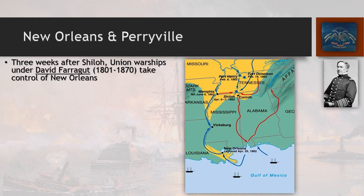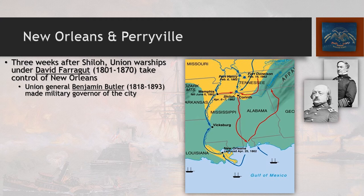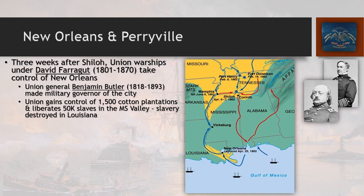Three weeks after the Battle of Shiloh, Union warships under David Farragut arrive in the Gulf of Mexico and take control of New Orleans, setting up a naval blockade and preventing any commerce from going in and out of the city. Union General Benjamin Butler is made military governor. The Union gains control of 1,500 cotton plantations and liberates about 50,000 slaves living in the Mississippi Valley. Slavery is effectively destroyed in Louisiana in one fell swoop — a very big victory for the Union.